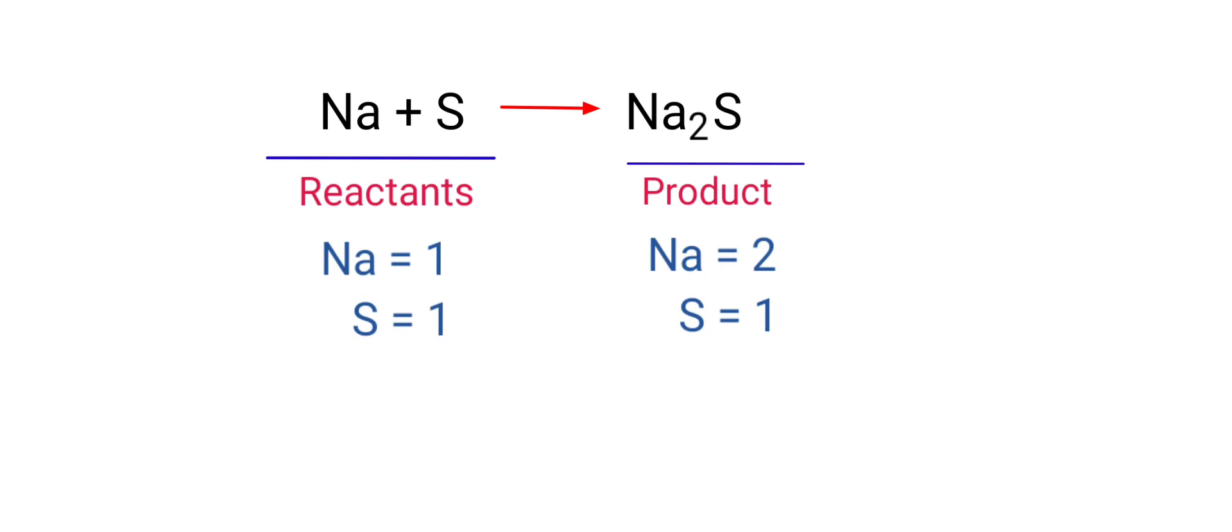If you look at this equation, it is not balanced. On the reactants side, there are one sodium atom and one sulfur atom present, and on the products side, there are two sodium atoms and one sulfur atom present. The number of atoms are not balanced on both sides.